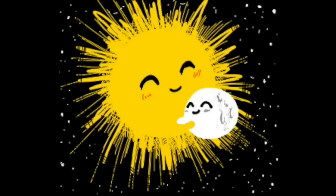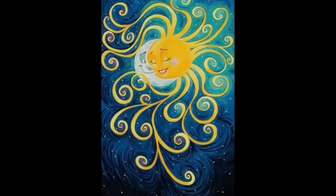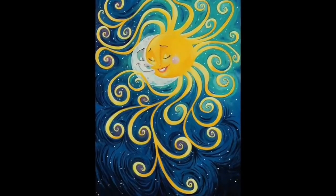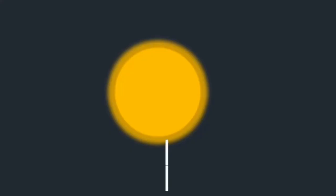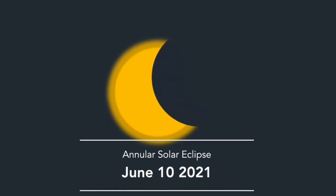An eclipse never comes alone. A solar eclipse always occurs about two weeks before or after a lunar eclipse. For this reason, be curious and eager to watch the annular solar eclipse on June 10, 2021.